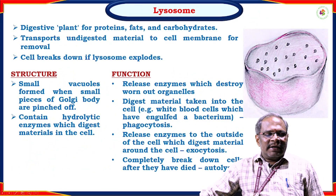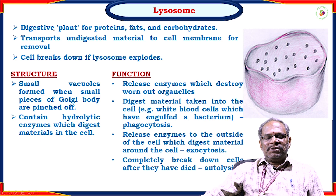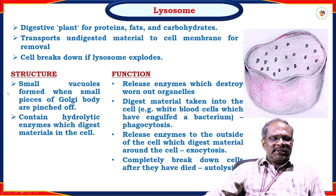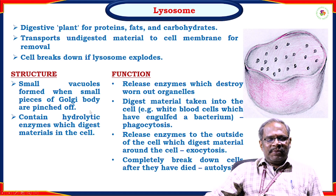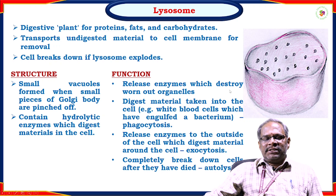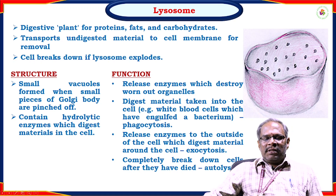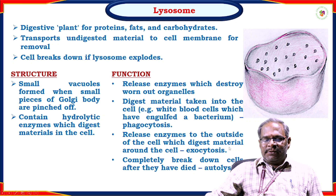Another small organelle is the lysosome. It is a digestive plant for proteins, fats, and carbohydrates. It transports undigested material to the cell membrane for removal. The cell breaks down if the lysosome ruptures. Structure: small vacuoles formed when small pieces of the Golgi body are pinched off, containing hydrolytic enzymes which digest materials in the cell. Major functions: release enzymes to destroy worn-out organelles, digest material taken into the cell such as bacteria via phagocytosis (e.g., white blood cells), release enzymes to the outside of the cell via exocytosis, and completely break down cells after they have died — this is called autolysis.